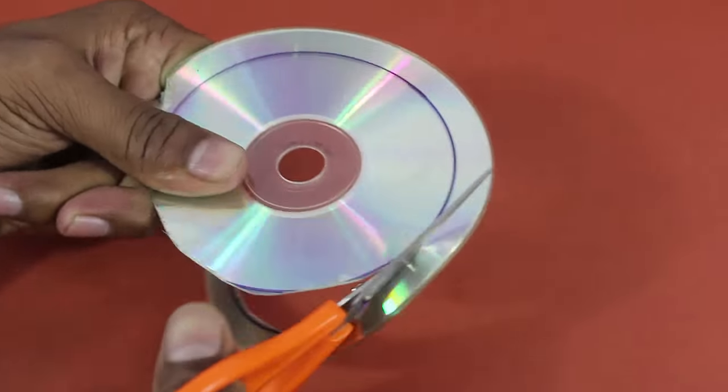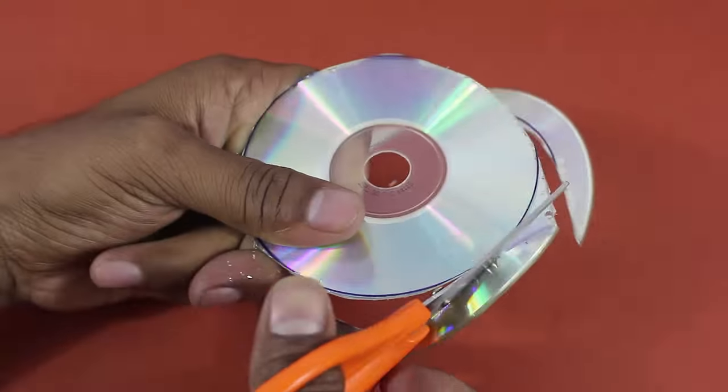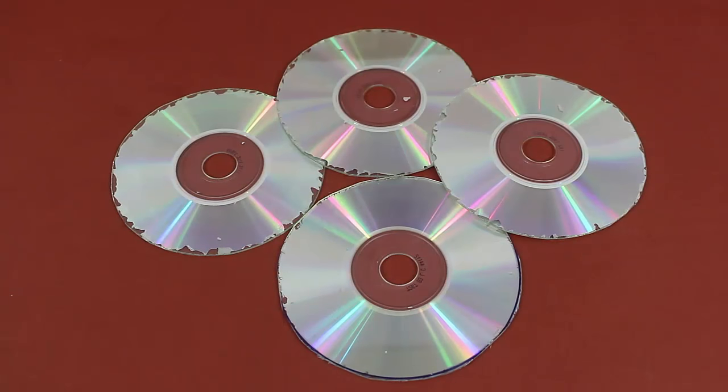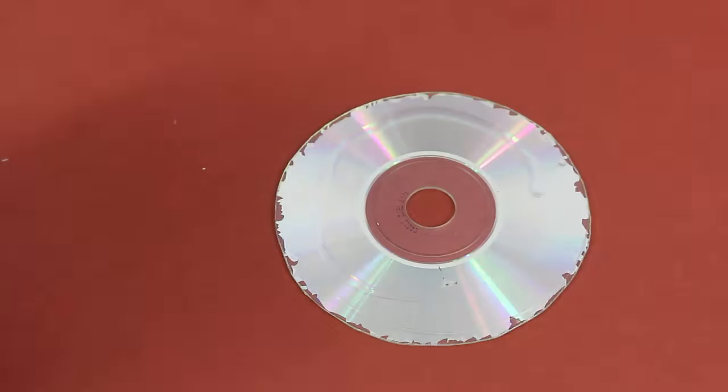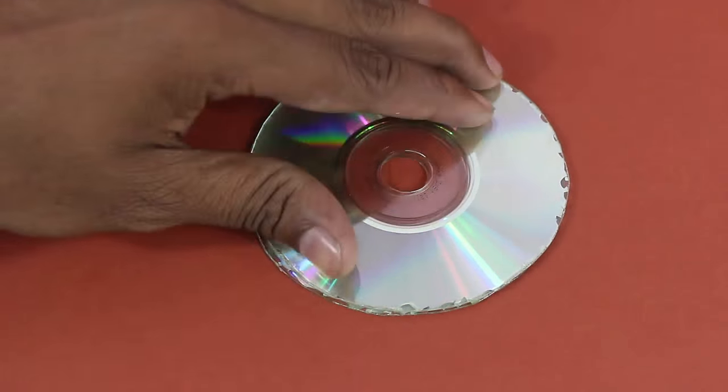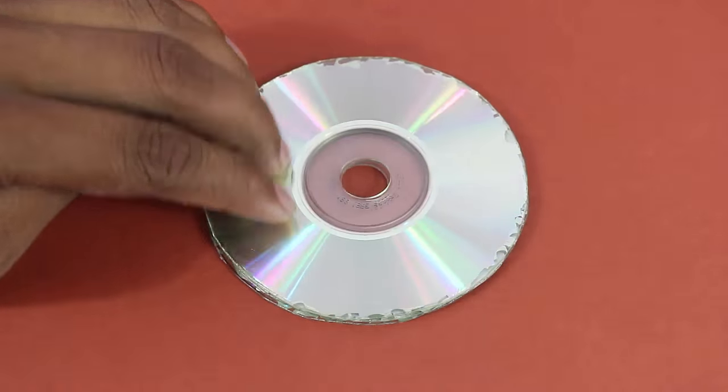First mark a small circle on four old CDs and then cut them with scissors. Then glue all these four small CDs together to make a thick heavy disc. This disc will act like a flywheel.